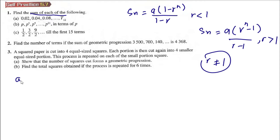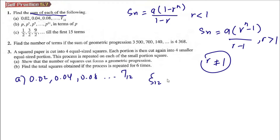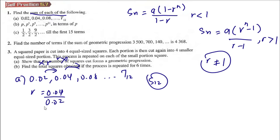For part A, the series is 0.02, 0.04, 0.08, and we need to find S12. First, find R: R = 0.04 divided by 0.02, which equals 2. So R is larger than 1.